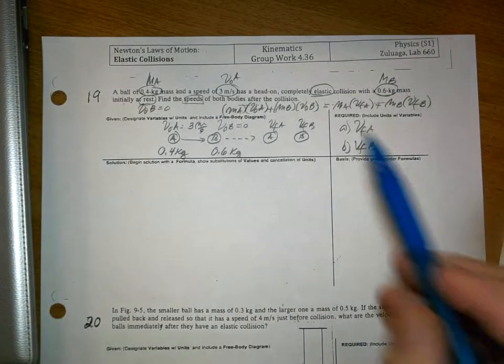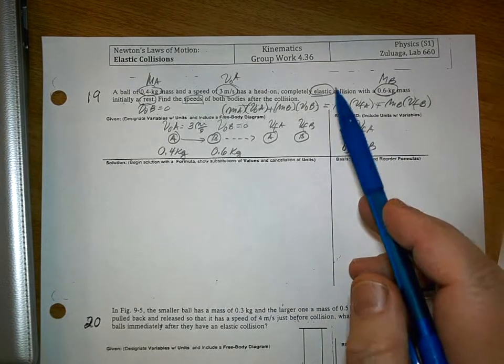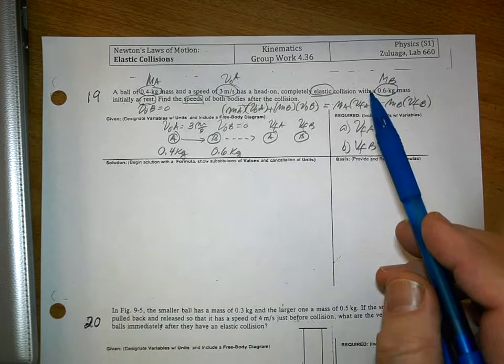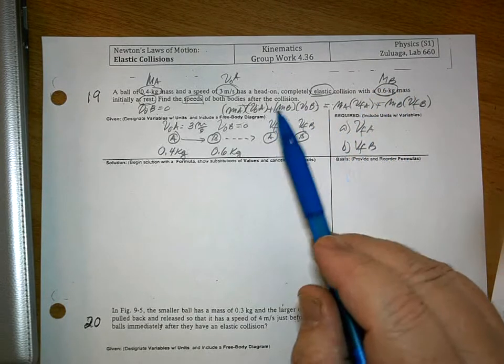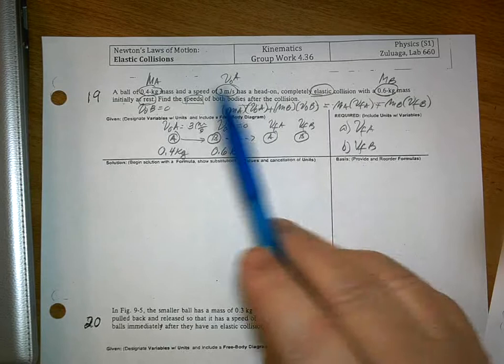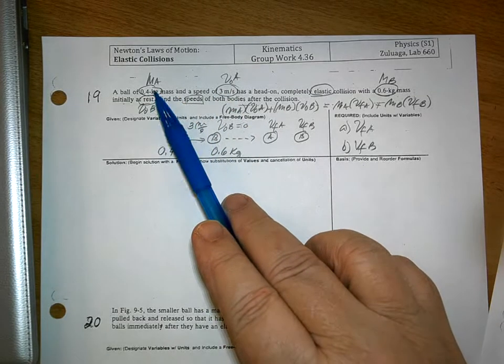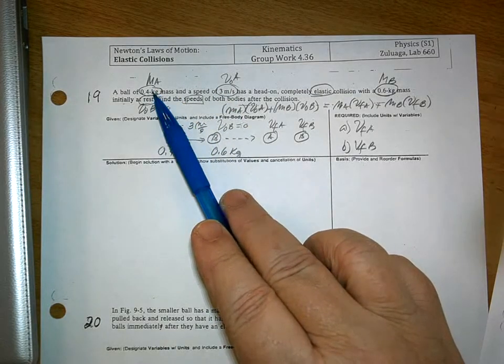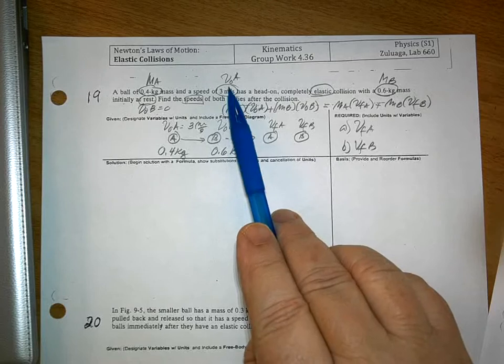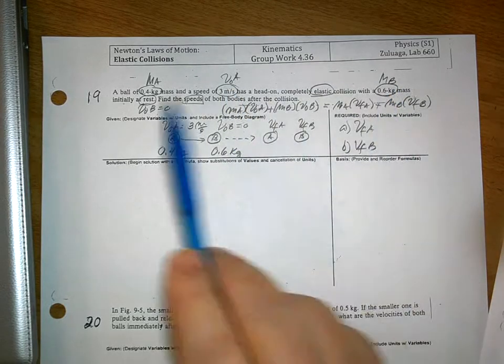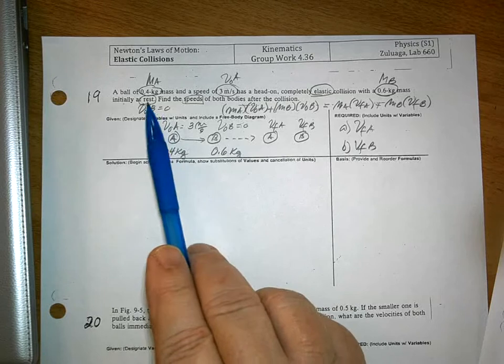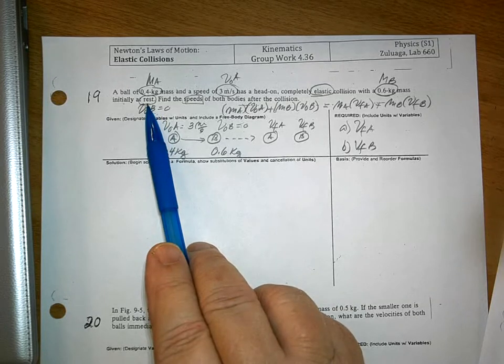I'm going to solve this problem. This problem is an elastic collision. We marked down all the given values: the mass of A, the initial velocity of A, the mass of B. The initial velocity of B is 0 because it says rest.